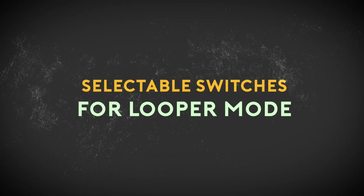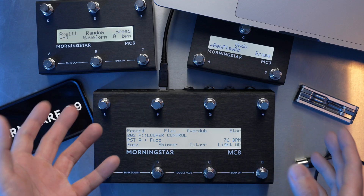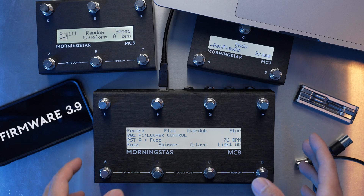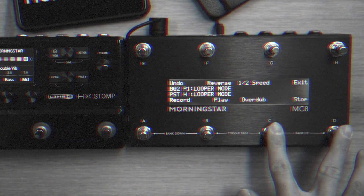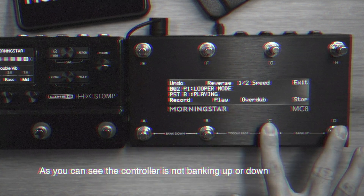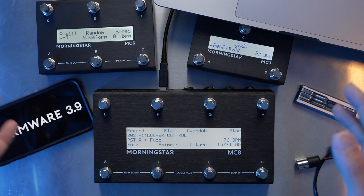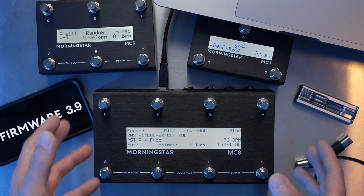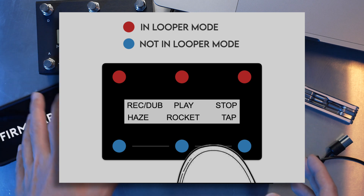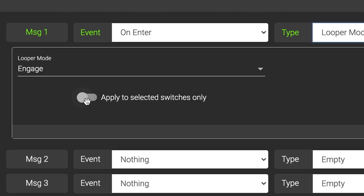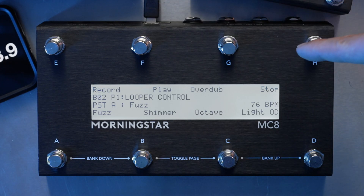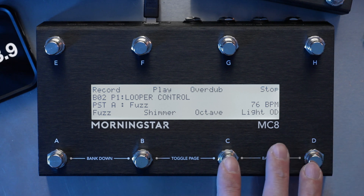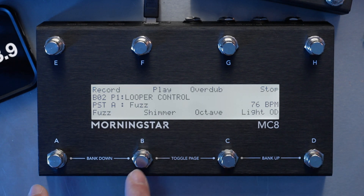The third feature is a pretty big one: selectable switches for looper mode. Looper mode has been a great feature that allows you to send MIDI messages with zero latency for precise and accurate looper control. However, it did have its shortcomings due to the fact that dual switch presses were automatically disabled for the entire bank, and you could not use other action types such as double tap and long press in looper mode. In firmware 3.9, you can now choose which switches you want to put into looper mode, giving you the best of both worlds. You still get your latency-free switches for looper control and the ability to bank up and down using dual switch presses, and also have switches with multi-action functionality.